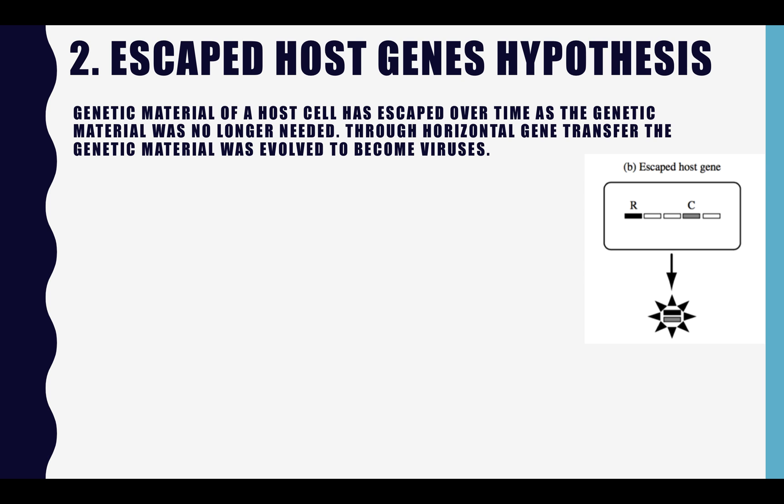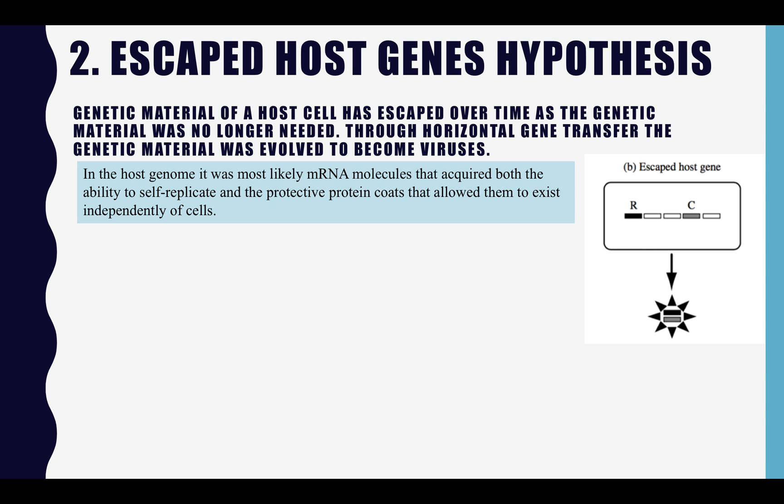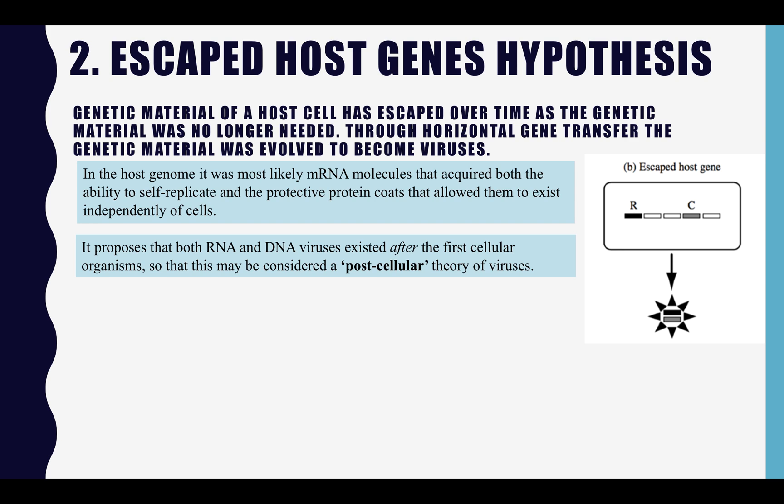The second hypothesis is the escaped host gene hypothesis. Genetic material of a host cell has escaped over time, as the genetic material was no longer needed, and through horizontal gene transfer, the genetic material was able to evolve to become a virus. In the host genome, it was most likely mRNA molecules that acquired the ability to self-replicate and form a protective protein coat, which allowed them to exist independently of the cells. It is proposed that both DNA and RNA viruses existed after the first cellular organism, so this is considered a post-cellular theory of viruses.